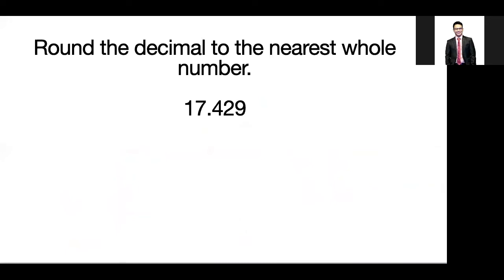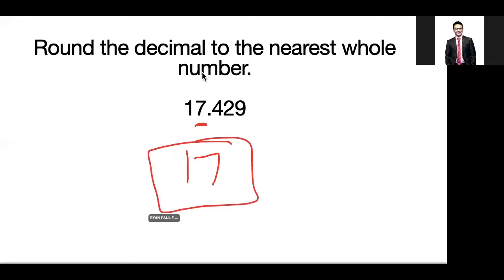The next question is rounding a number to the nearest whole number. The nearest whole number is the ones digit. Because the number after the decimal point is 4, which is less than 5, we retain the ones digit which is 7 and change everything after to 0. Therefore the answer is 17.